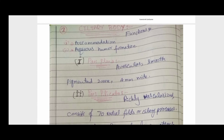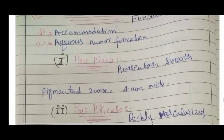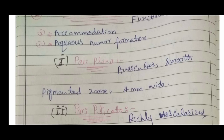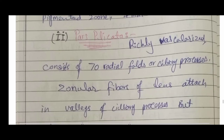The ciliary body is basically a muscular layer. Its functions relate to accommodation and production of aqueous humor. Accommodation is the focusing function, and aqueous humor protects the eye from pathogens by being antimicrobial. The ciliary body is composed of two parts: pars plana — an avascular smooth pigmented zone about 4 mm in width — and pars plicata, which is heavily vascularized and consists of 70 radial folds of the ciliary processes that produce aqueous humor.